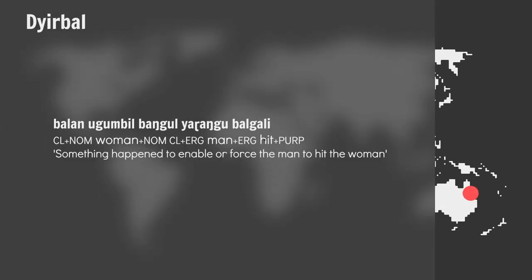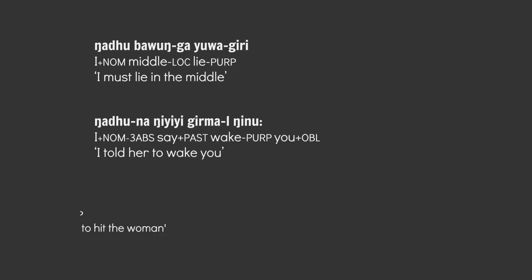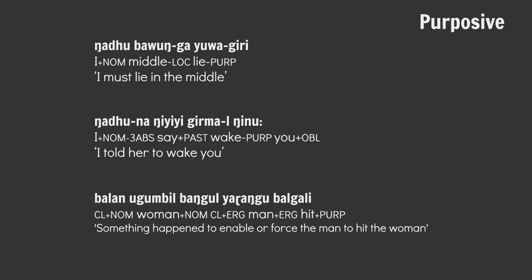Gerbil uses the purposive in main clauses to suggest a result from an unknown cause. In Yediny, it can be used to express purpose and to indicate a natural result. Why obligations, indirect commands, and results should be marked as purposive is mind-bending at first, but think about it like this: there's a purpose in me doing this thing — obligation; there's a purpose in you doing this thing — indirect commands; there's a purpose in this thing happening — result.